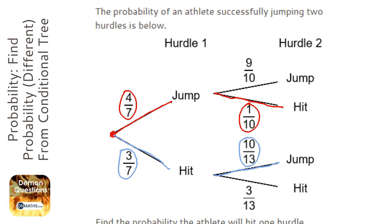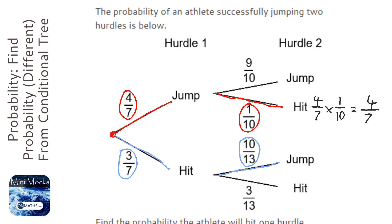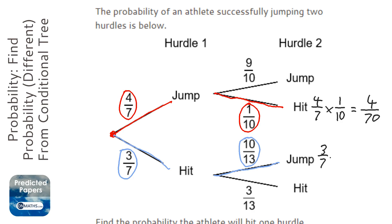Next we need to work out the probabilities. He will jump the first one then hit the second one — we get the two fractions and multiply them together, so that would be 4 over 70. No need to cancel at this point. Now let's work out the probability he hits the first one and then jumps the second one, so that's 3 over 7 times 10 over 13.